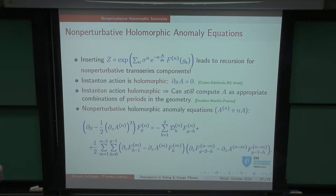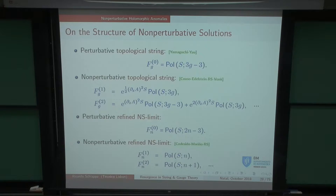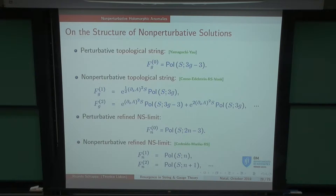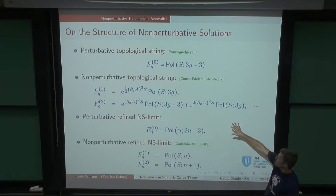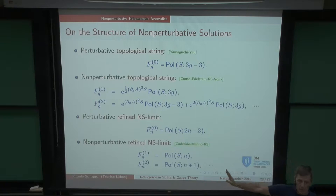Focusing on dimension-one complex structure moduli space — the case of local P2 — the holomorphic anomaly equation for the partition function is a heat-type equation in S. Plugging in Z as the exponential of F_0 gives back the correct holomorphic anomaly. Plugging in Z as a trans-series and cranking the wheel, the first thing you get is that the instanton action is holomorphic — confirming the previous claim in the literature that A should be a combination of periods in the geometry.